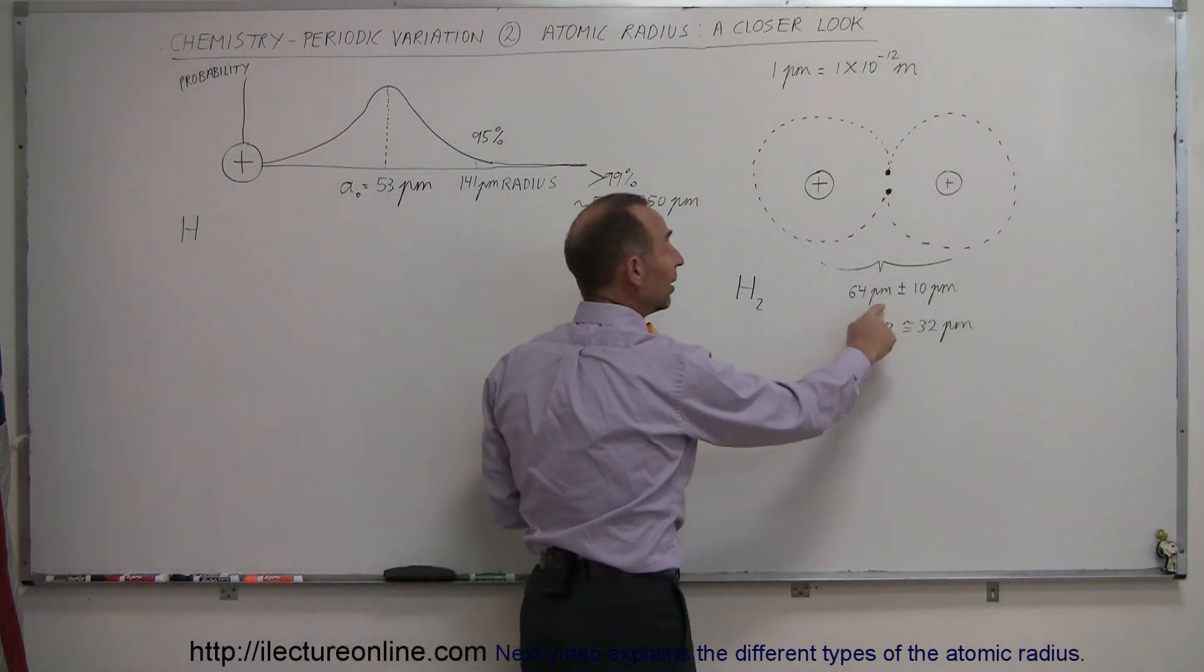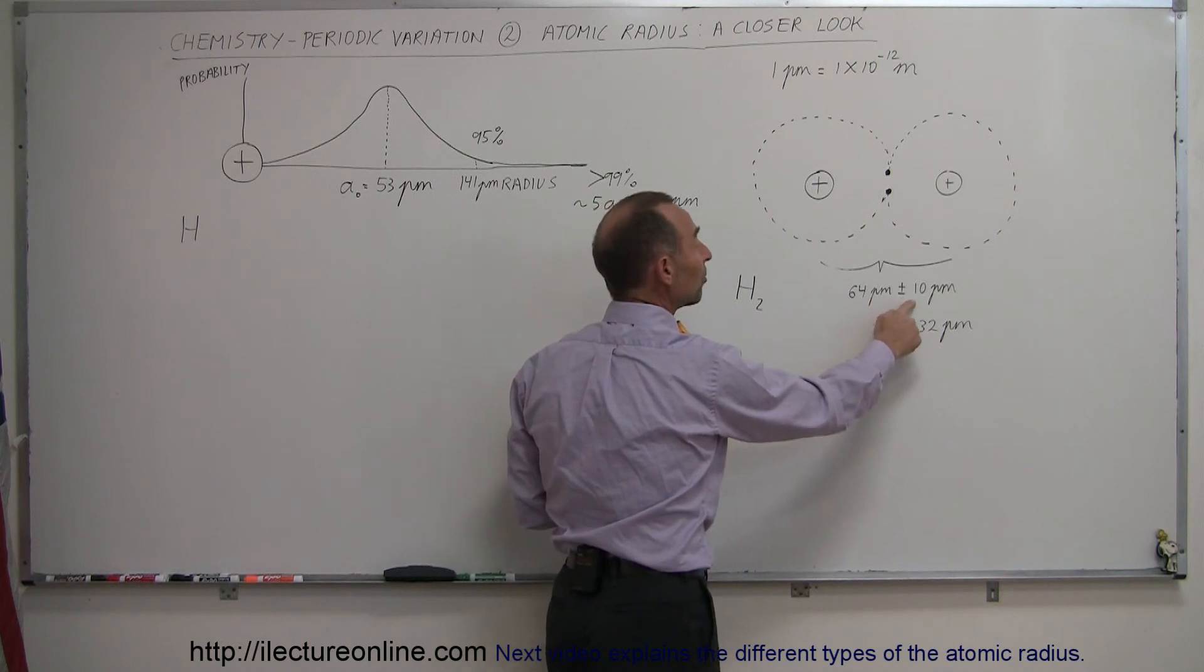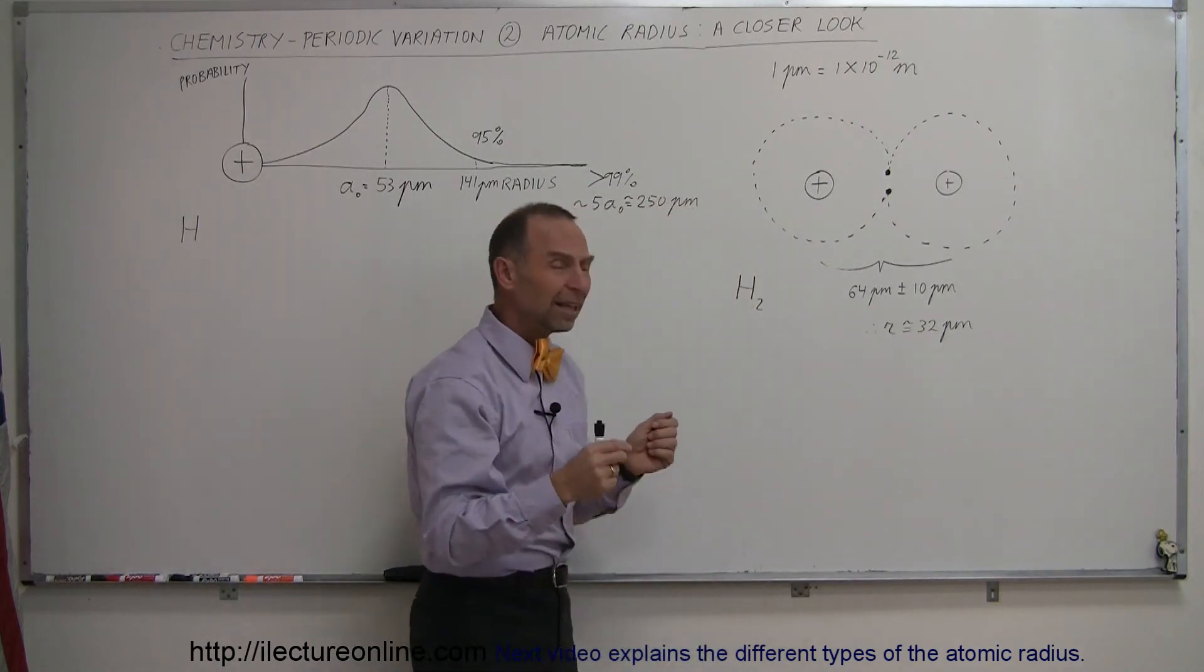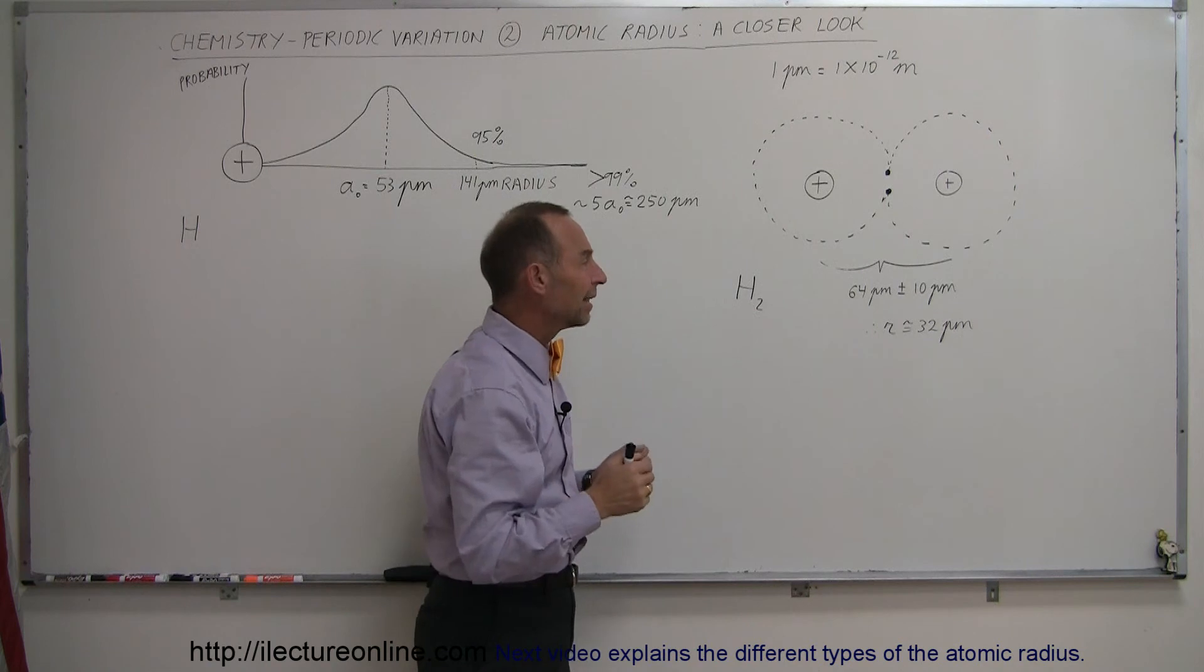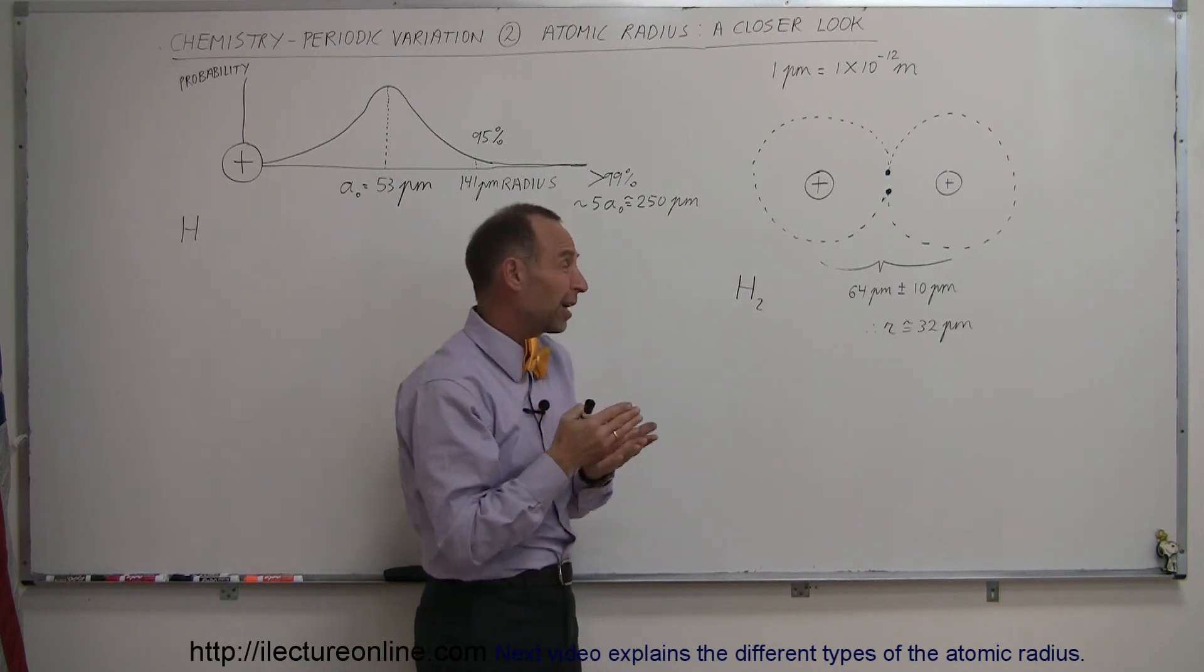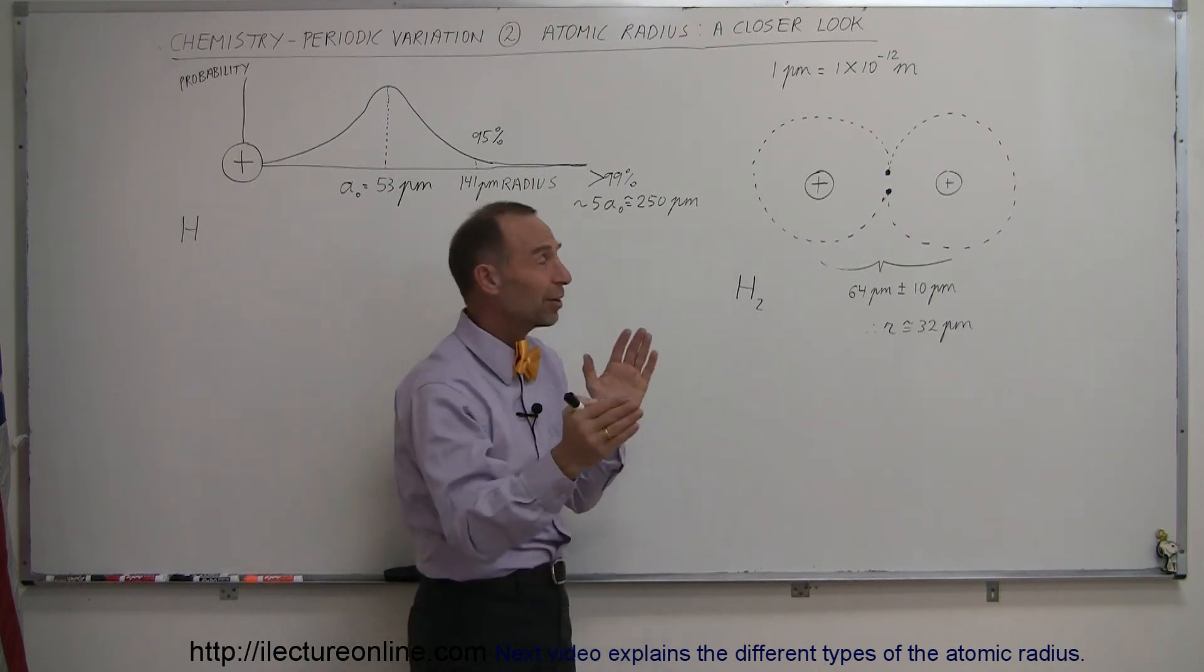Now, also notice a plus or minus. This is 64 picometers, plus or minus 10 picometers. In other words, they're saying that measurement is so difficult to make that we're not quite sure that it's 64. It could be as little as 54 and as much as 74 picometers.